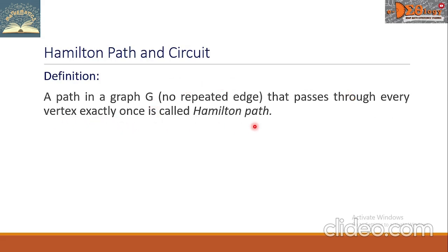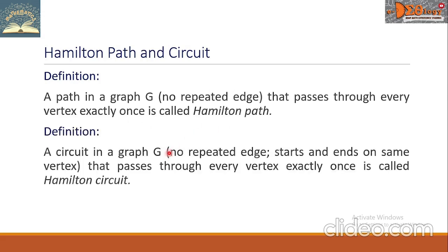is called Hamilton Path. Let's define Hamilton Circuit. A circuit in a graph G, that means no repeated edge and starts and ends on same vertex, that passes through every vertex exactly once, is called Hamilton Circuit.